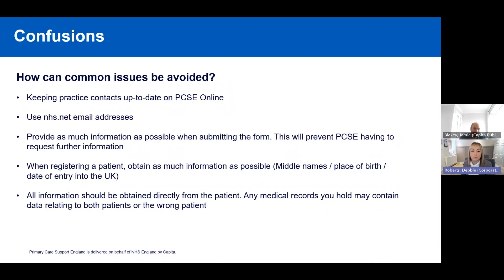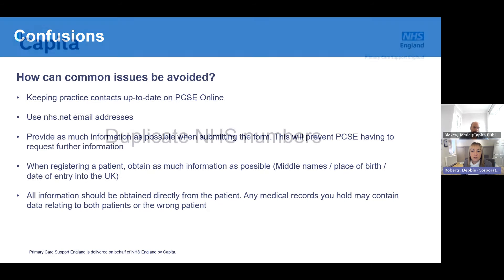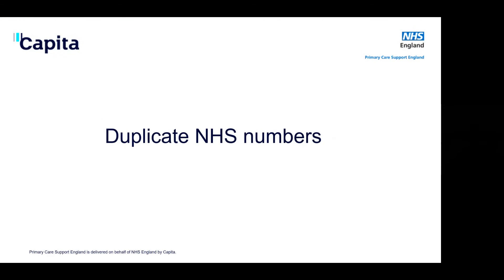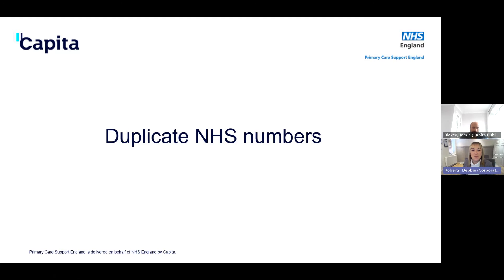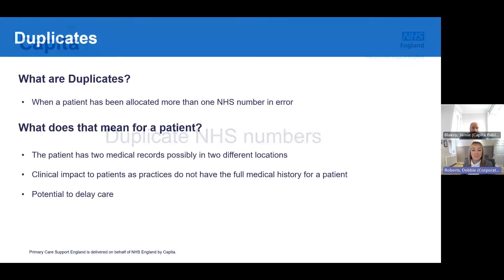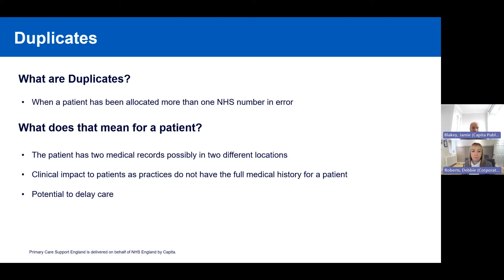Moving on to duplicate NHS numbers: a duplicate is where a patient has two or more NHS numbers, with the second or any further ones having been allocated to the patient in error. This can mean there are multiple medical records in different locations, which means a clinician may not have all the correct information for a patient, potentially delaying or resulting in incorrect care.